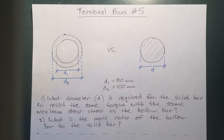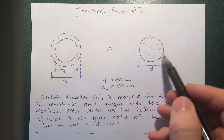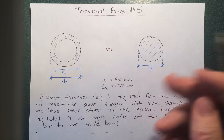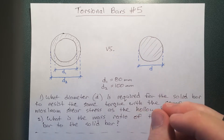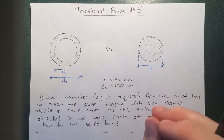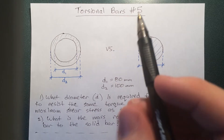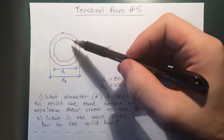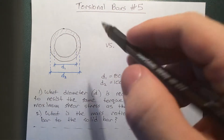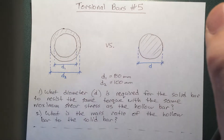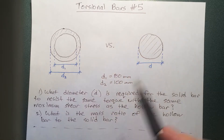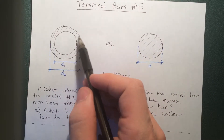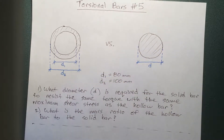This is a very common engineering question. Let's say in a given application you have this solid bar doing something — maybe it's in a turbine and it's twisting. We want to make it more efficient, and more efficient usually means less cost for the same amount of work. Basically, we're asking what diameter does the solid bar have to be to do the same job as this hollow one. In reality you'd probably solve it the other way — given one diameter, find the ratio — but it's essentially the same problem.